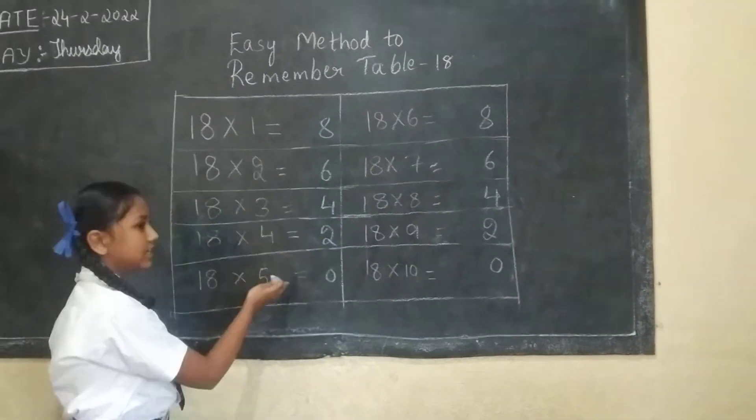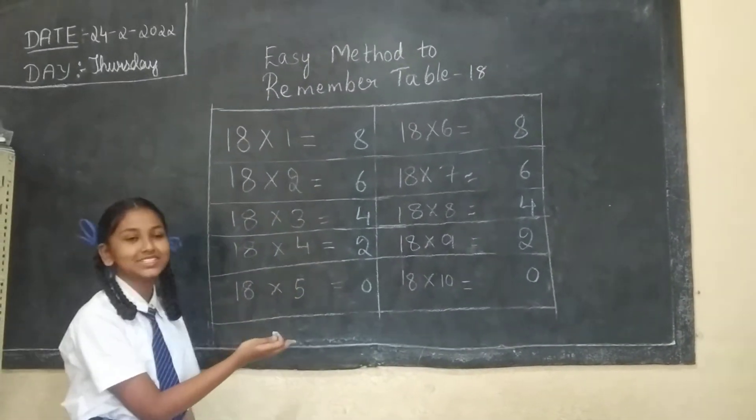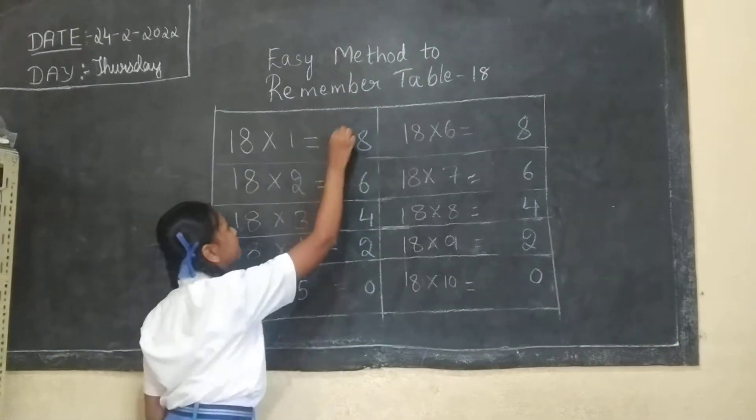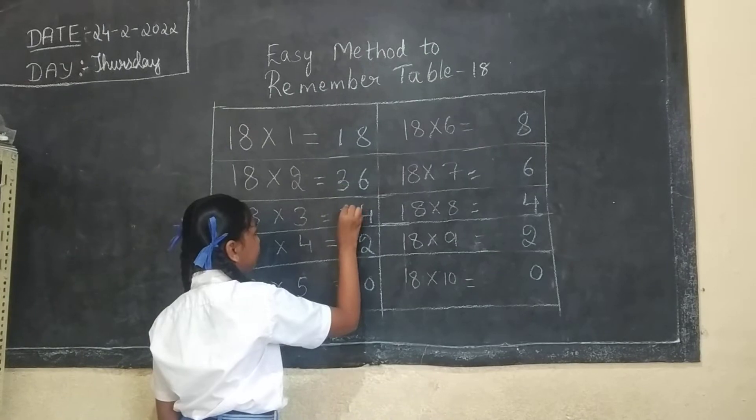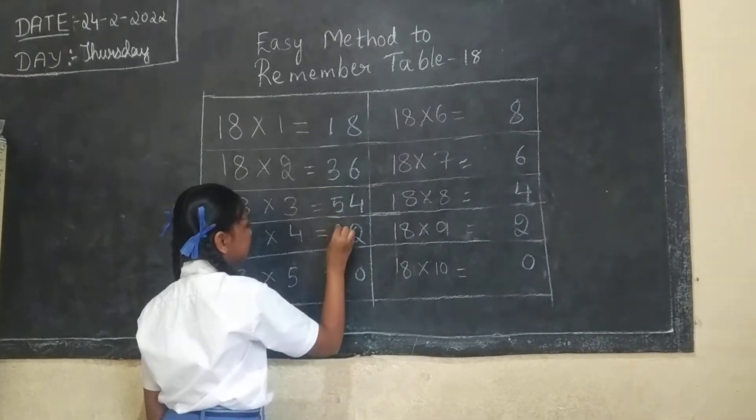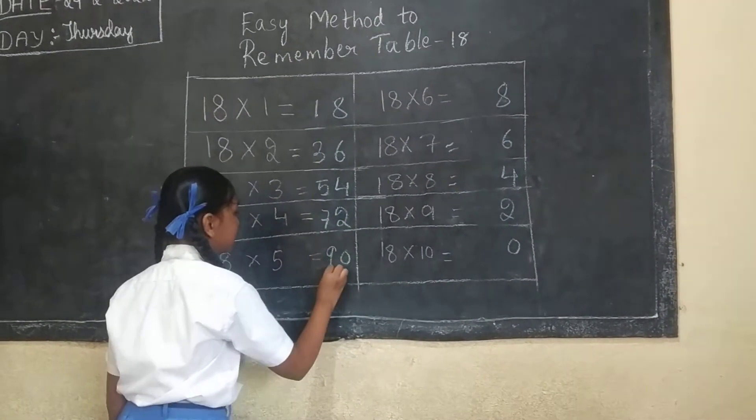And we should write here odd numbers: 1, 3, 5, 7, 9.